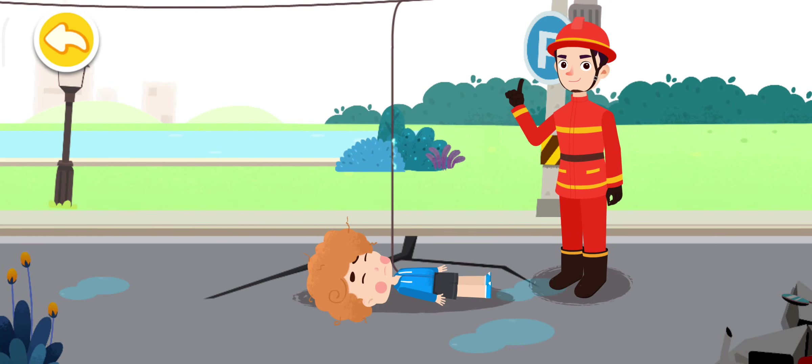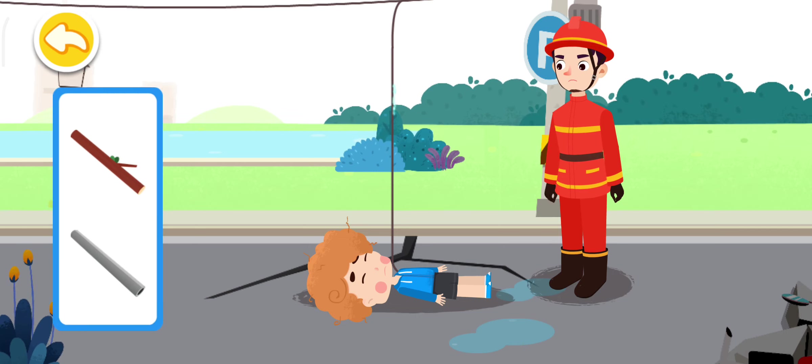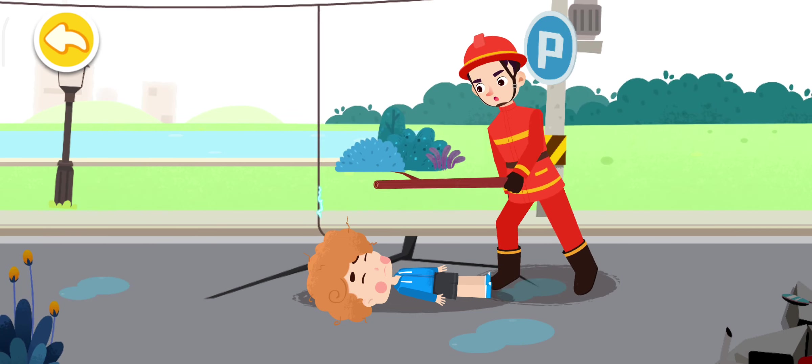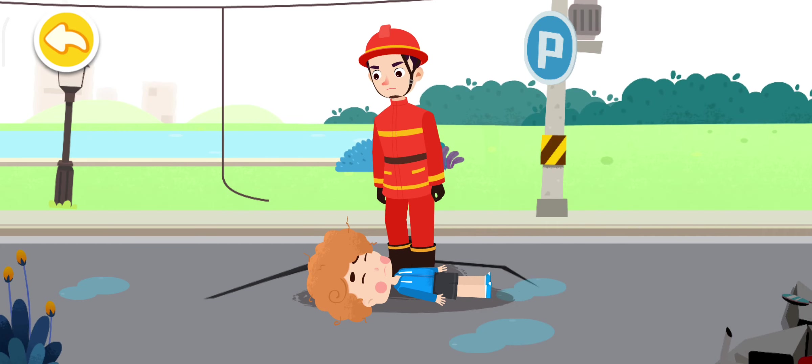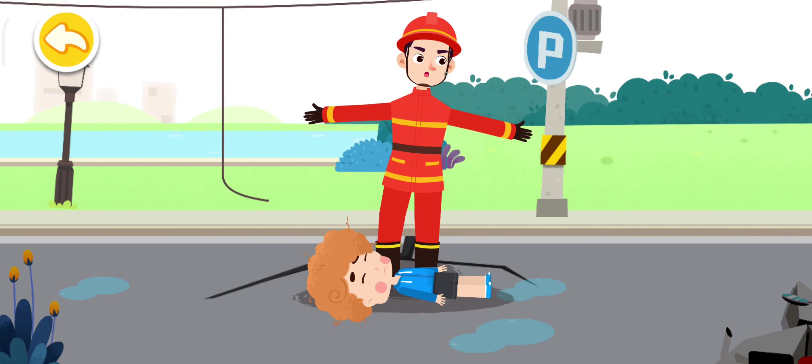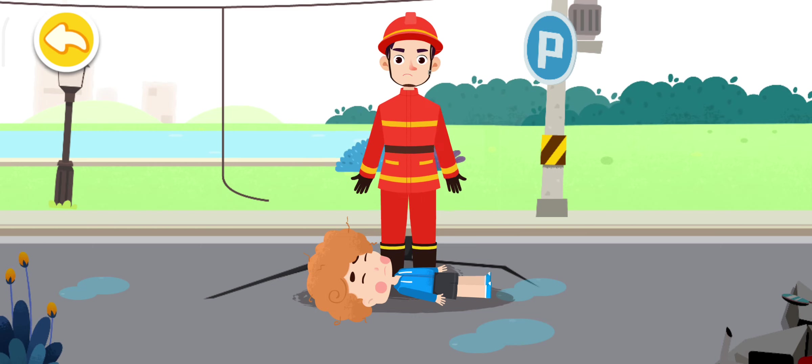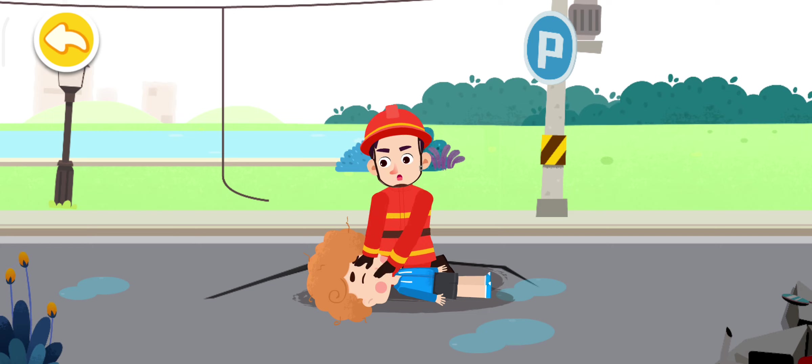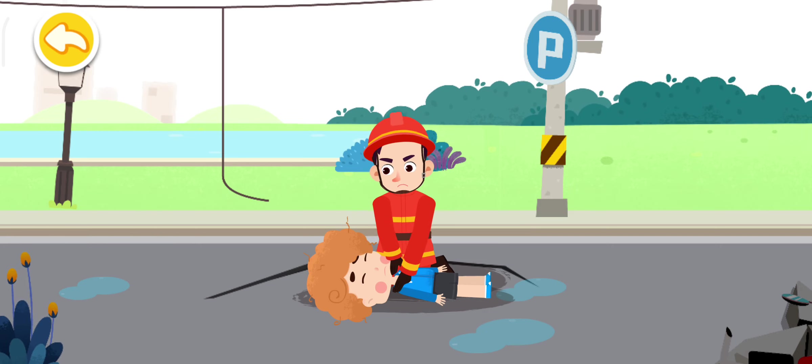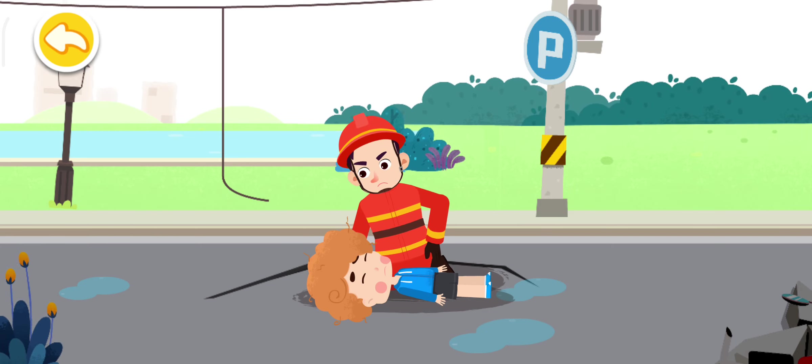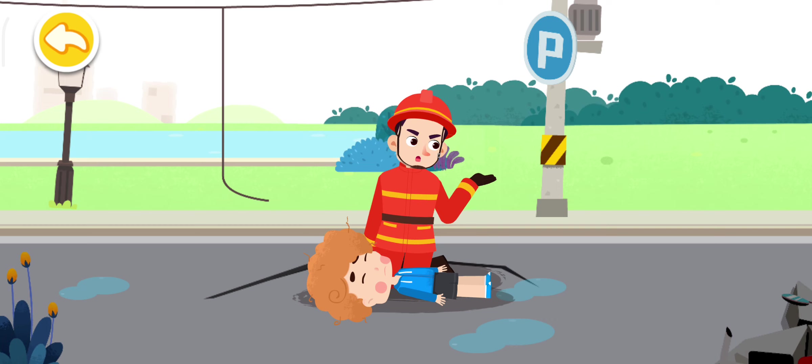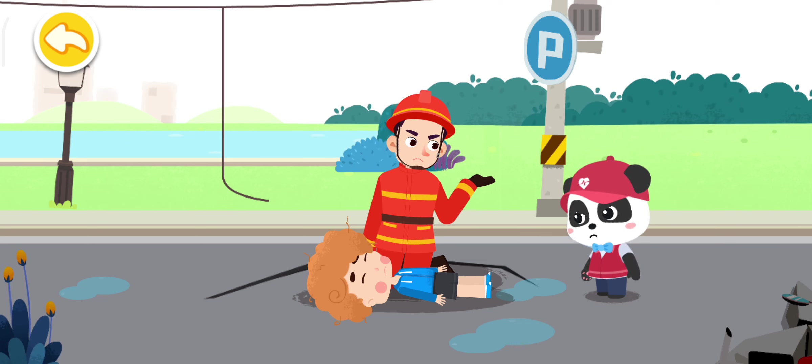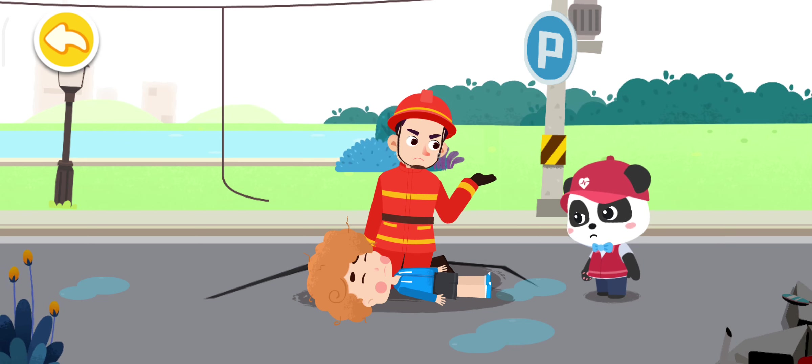Do you know what tools can be used to pick the power line? You are right. Dry wooden sticks can stop the flow of electricity. The on-site environment is safe. I have received professional first aid training. We can start the rescue now. Please help me call the emergency number and get an automated external defibrillator, AED. Okay!